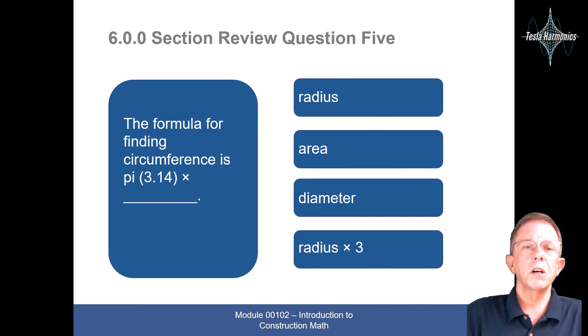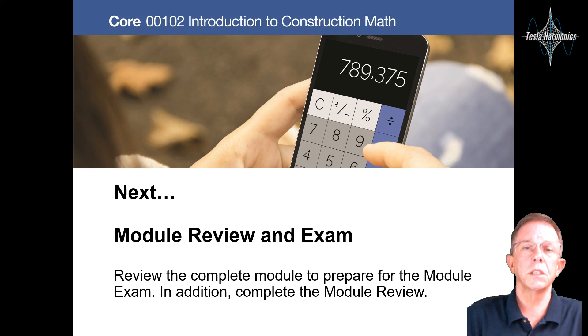The volume, for the formula for finding the circumference of pi, 3.14 times radius, area, diameter, or radius times 3. That would be diameter.